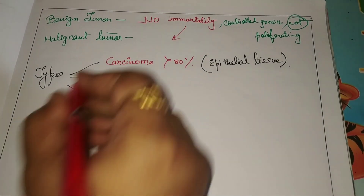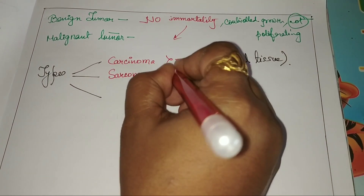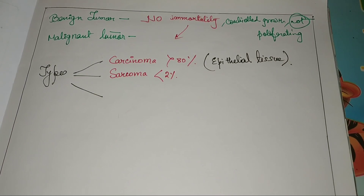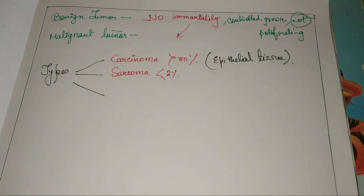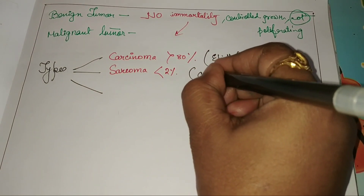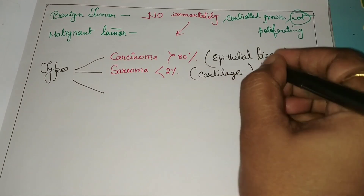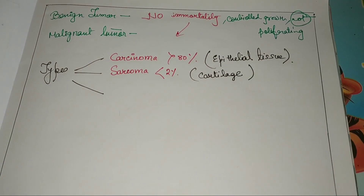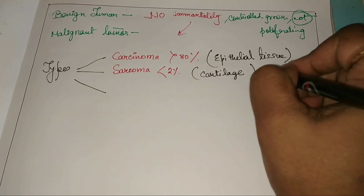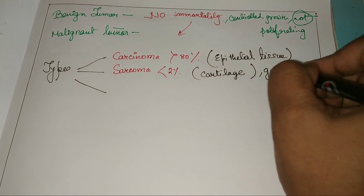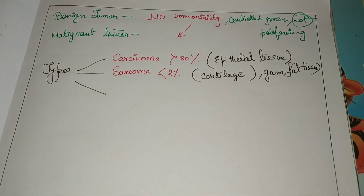Another type is sarcoma, which shows less than 2% of cases. This type of cancer occurs in cartilage, bone, gum, and fat tissue.